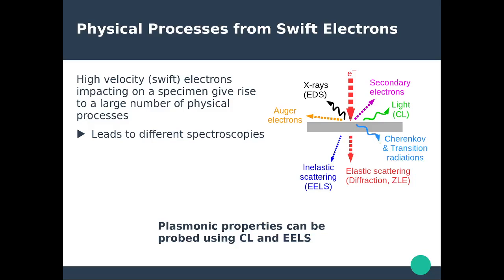Because you have very fast-moving charges passing through an interface, you're going to have Cherenkov and transition radiations. What we are interested in in this chapter are the last two physical processes: the emission of light as a result of the interaction of these electrons with the system — known as cathodoluminescence — and a fraction of electrons that pass through the system but lose a little bit of energy through inelastic scattering, which gives you electron energy loss spectroscopy, or EELS.